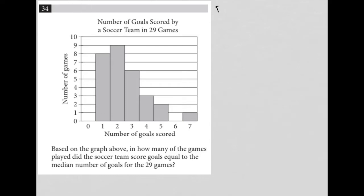So this question is a diagram question. We have a chart provided here, and we can see that the x-axis is number of goals scored, the y-axis is number of games, and the topic is number of goals scored by a soccer team in 29 games. I like to make sure I understand the diagram before looking at the question, because otherwise I might get even more confused.